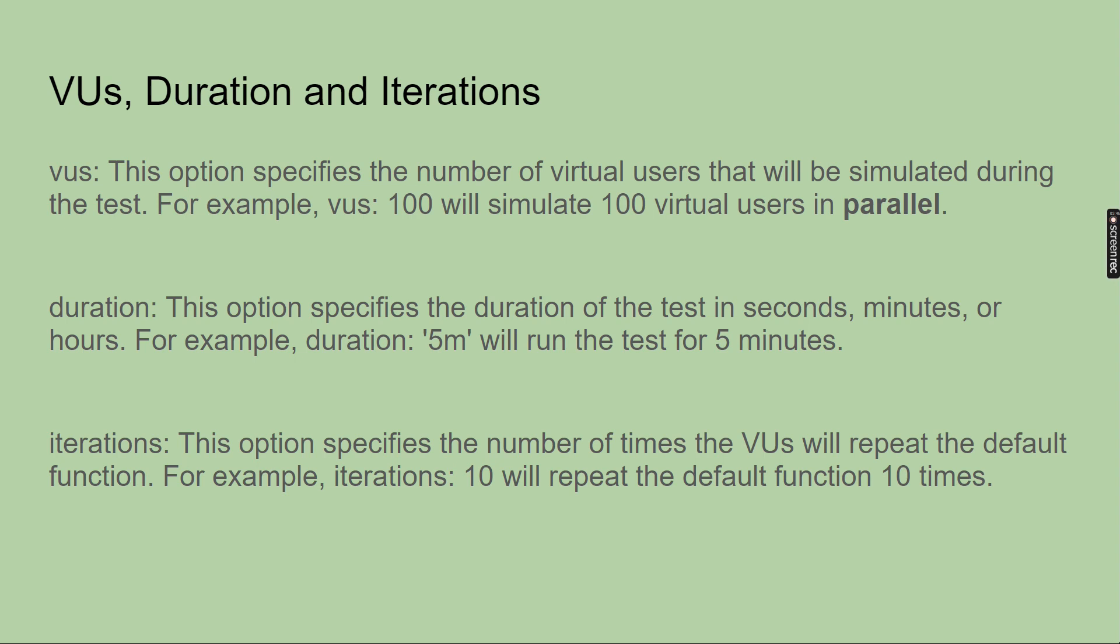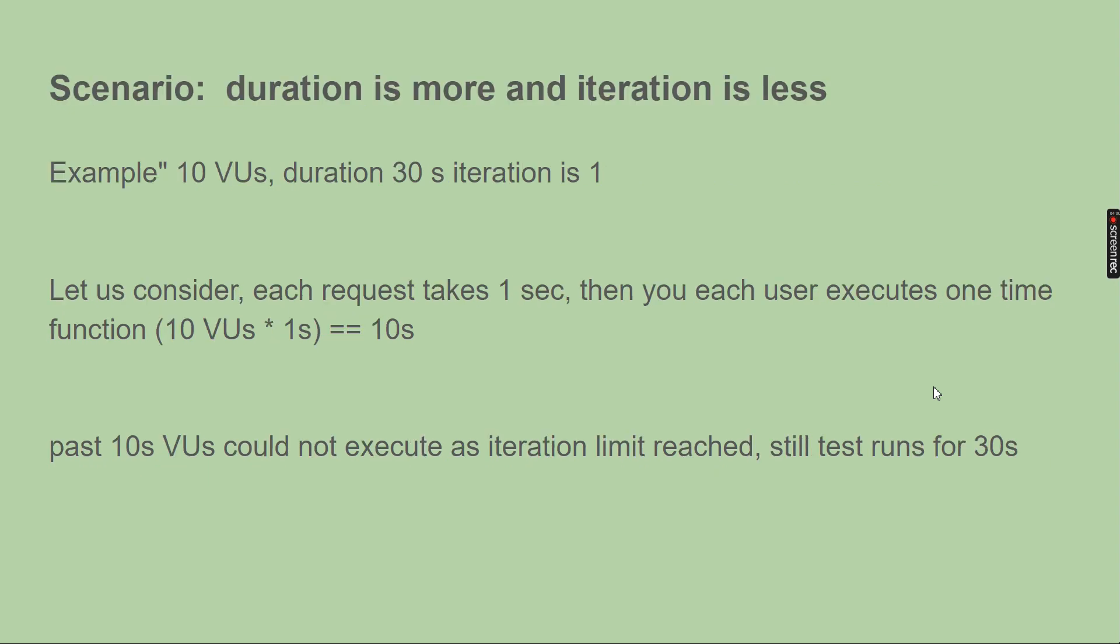Now considering these 3 in combination, let's see some examples or scenarios. What happens if you have more duration or more iterations or less virtual users? Let's consider a basic scenario. The first scenario we are going to see is duration is more and iteration is less. Example: let's say you have 10 virtual users, duration is 30 seconds and iteration is 1. Now for simplicity we will consider whatever application you are targeting takes 1 second to respond, just to make this example very simple.